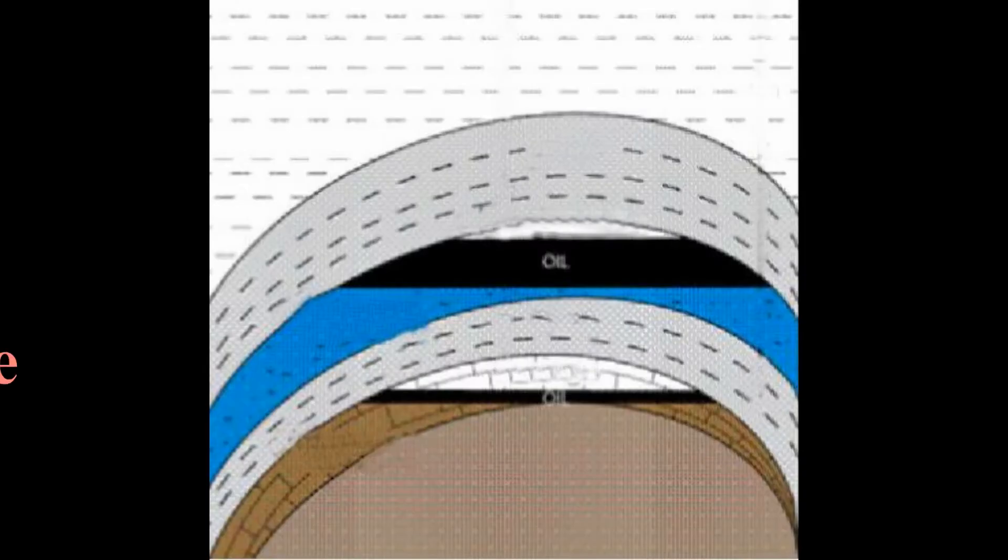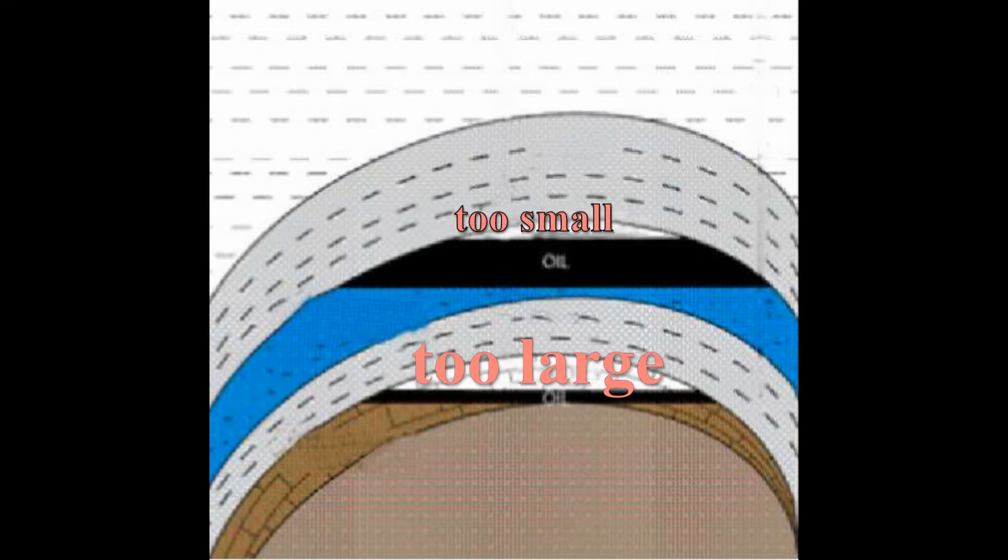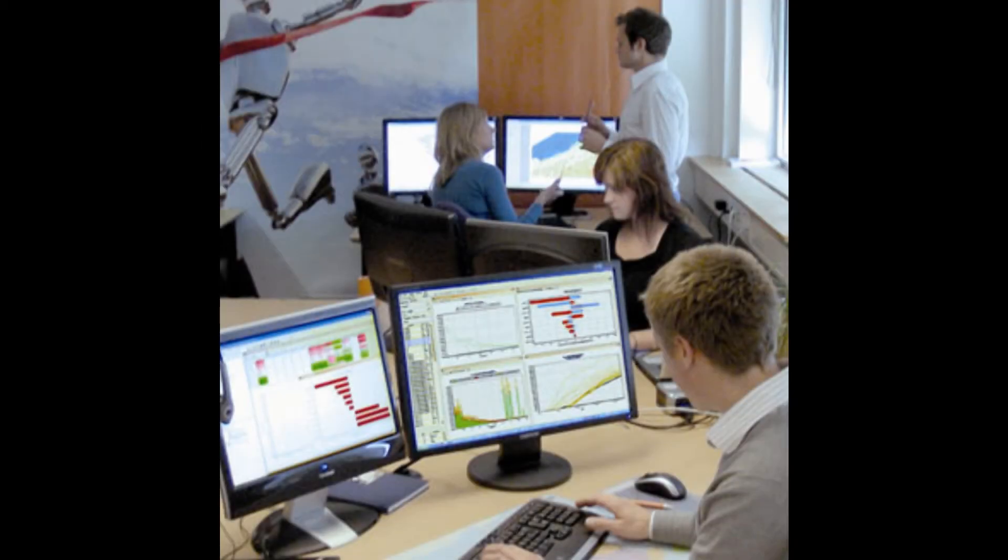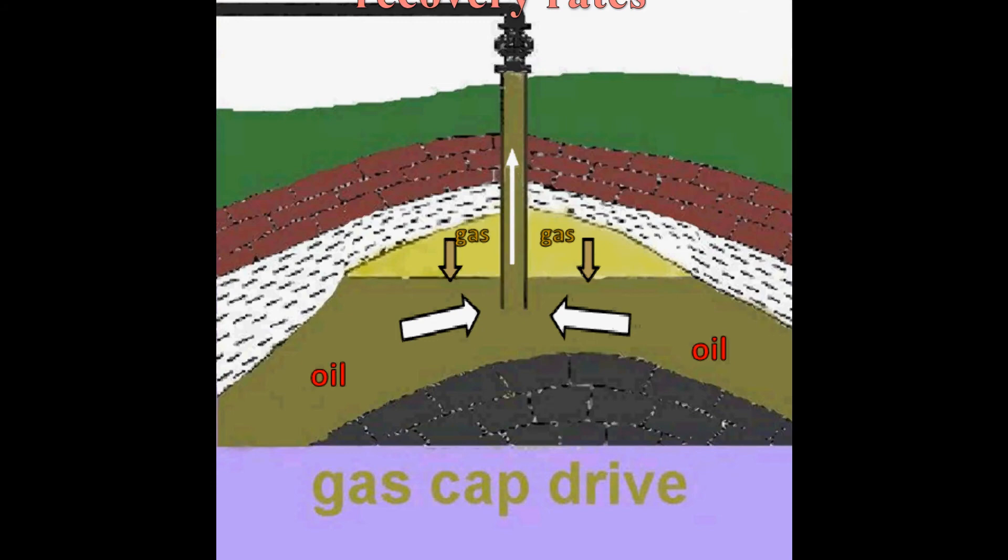Gas caps that are too large or too small can impede oil recovery, so the effectiveness of a gas cap drive depends on its size relative to the size of the oil zone. Production engineers monitor the gas cap size closely to optimize oil production. When conditions are right and a gas cap drive can be used, recovery rates average about 30-40%.